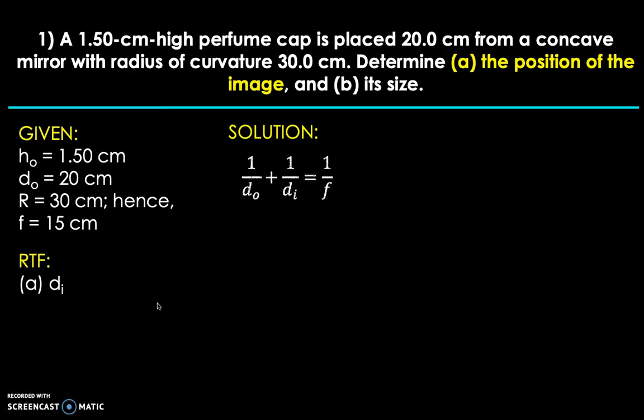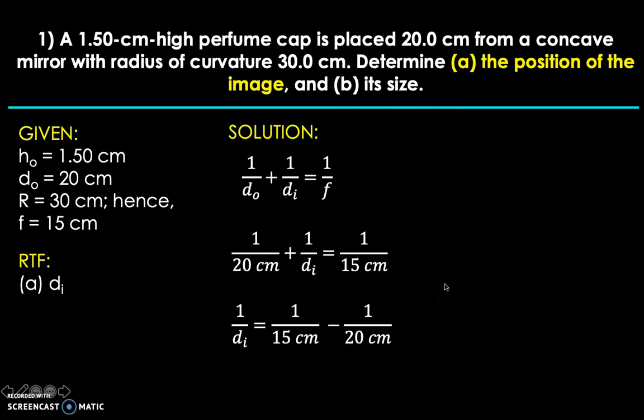And then for the solution, we have the mirror equation. And it's obviously going to work because d sub i, which is the RTF, is present. And d sub o and focal length are actually known in the problem. And then if you substitute the given, we're going to have this. And since we want to isolate d sub i, we have to transpose 1 over 20 on the right side of the equation. So we're going to have this. And once again, when you transpose, it will take the opposite sign.